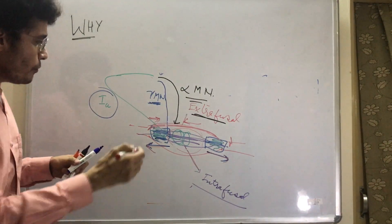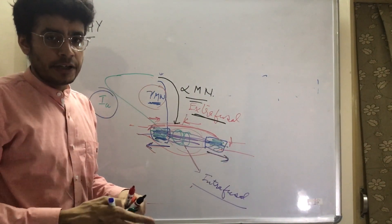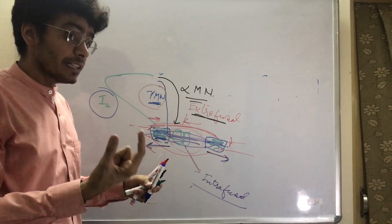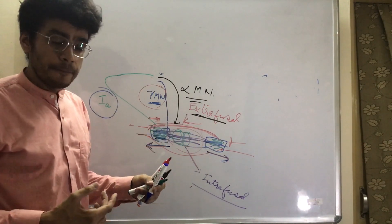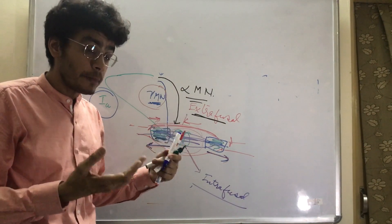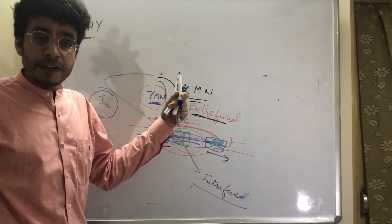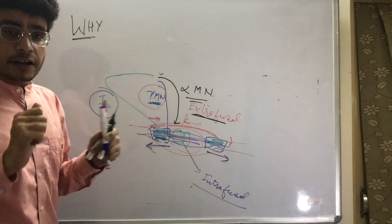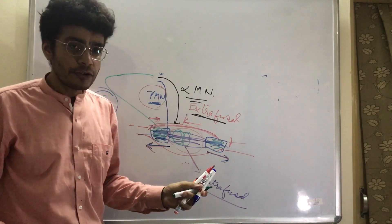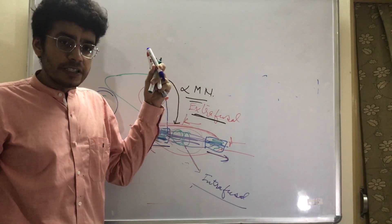In the superficial reflex, the gamma motor neuron is totally absent. Take the withdrawal reflex: when we touch a hot pan in the kitchen, the hand immediately withdraws. The sensory receptor here perceives increased temperature, which causes pain. These pain and temperature receptors are not located within the muscle — they are located in the skin. That's why this reflex is called a superficial reflex. Reflexes are classified as deep or superficial based on the location of their sensory receptor.